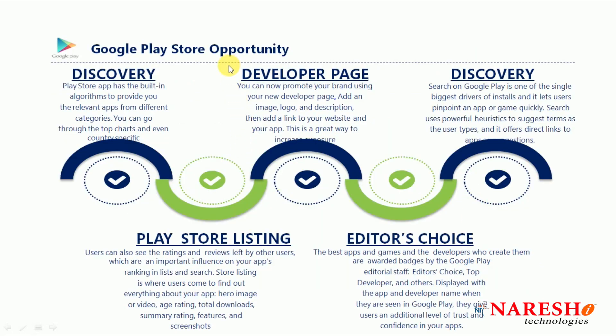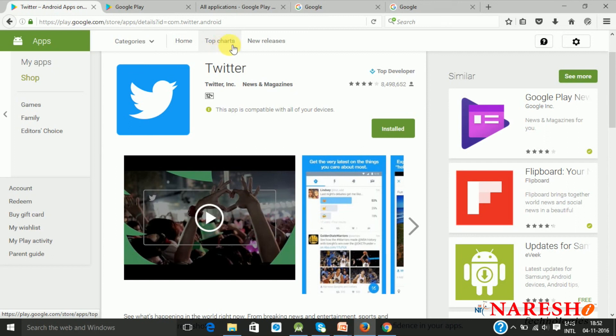When you look at the opportunities the Google Play Store provides, the first one is intelligent discovery. The Play Store has many algorithms running internally. Once you type some keyword, it will bring all relevant applications to the front page. You will have different segments like top charts and new releases, all filtered according to the algorithms, ratings, and reviews. If ratings are poor and reviews are bad, the position of your application will go down on the Play Store.